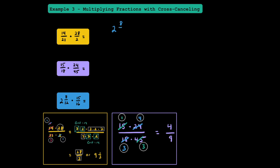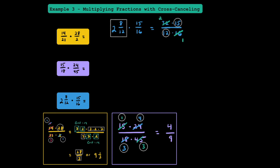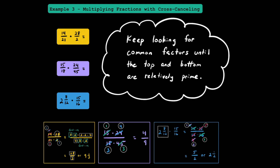Let's try this one more time. We have 2 and 8 twelfths multiplied by 15 sixteenths. Converting: 2 times 12 is 24, plus 8 is 32, so it's 32 twelfths times 15 sixteenths. Notice 32 is double 16, so dividing both by 16 gives 2 over 1. Looking at 12 and 15, both divisible by 3: 15 divided by 3 is 5, and 12 divided by 3 is 4. Seeing 2 and 4, divide both by 2 to get 1 and 2. The numerator gives 1 times 5 = 5, denominator gives 2 times 1 = 2. As a mixed number, 5 halves is 2 and 1 half. Keep looking for common factors until the top and bottom are relatively prime.